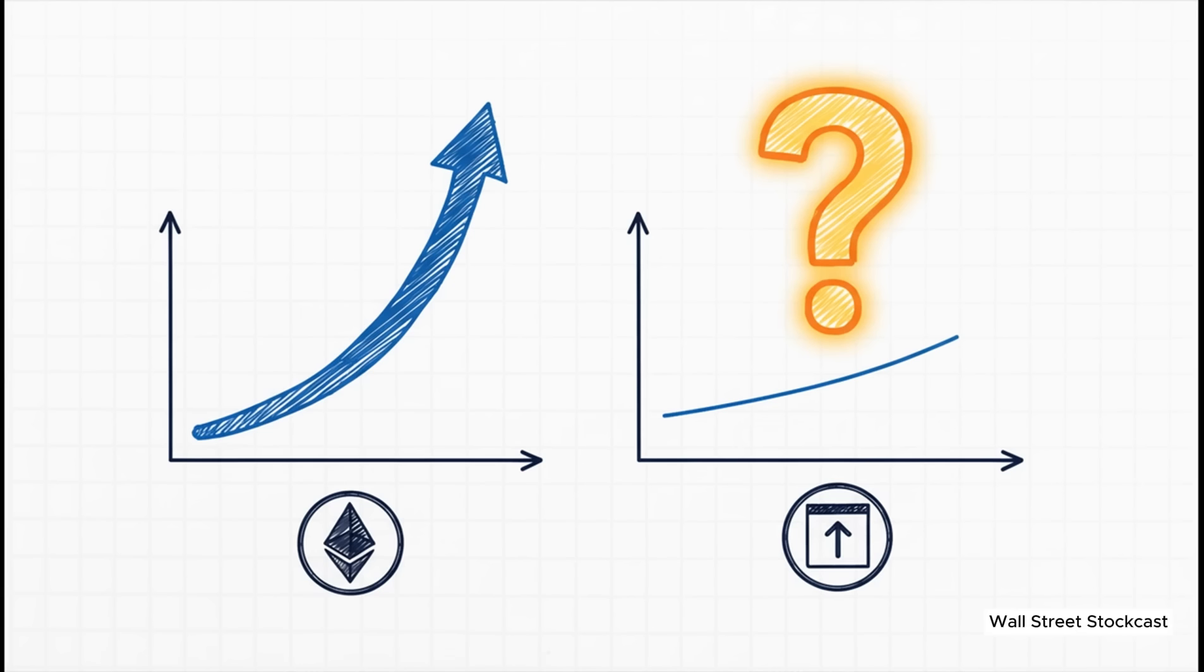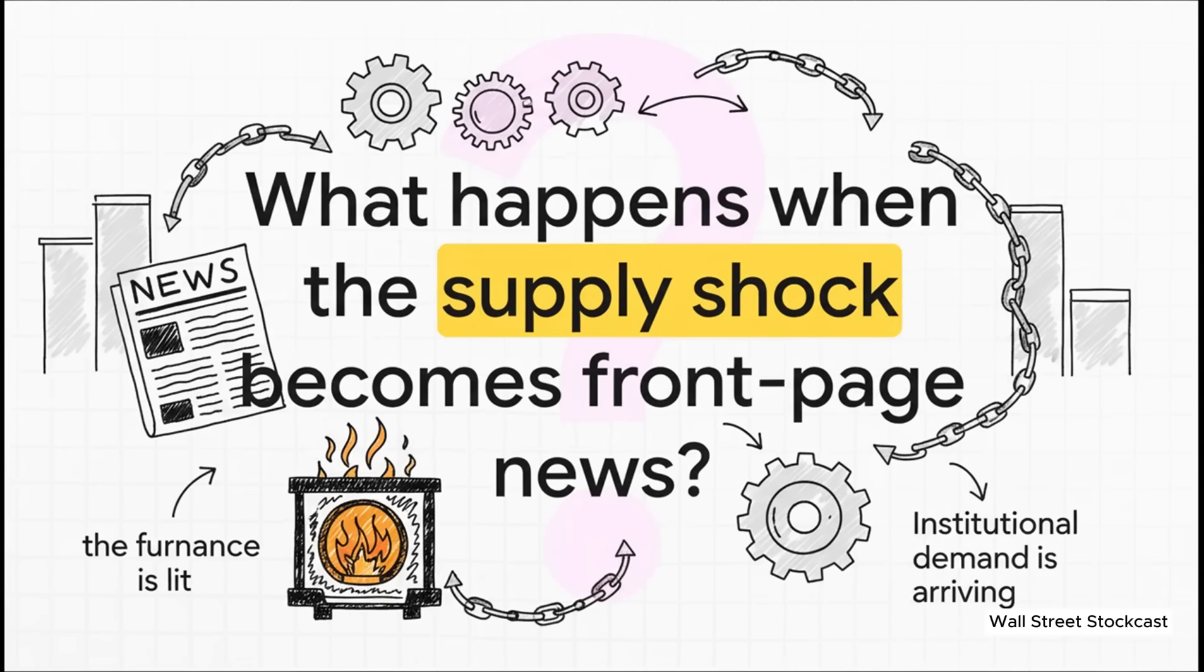And this is the absolute core of the investment thesis we're looking at today. The argument is simple. The price of the underlying asset, ETH, is starting to wake up to this new deflationary reality. But the stock price of the public company holding a massive fixed amount of it, BMNR, is still lagging way behind. The market for the stock just hasn't caught up yet. It hasn't priced in this fundamental change. And that delay, that right there, is the opportunity gap. So when you put it all together, what you have is this incredible monetary experiment playing out in real time. A global, decentralized currency that is mechanically programmed to destroy itself at a faster and faster rate the more it gets used. The on-chain data shows the furnace is lit. The institutional demand is starting to show up. So the only real question left is, what happens when this slow-moving on-chain supply shock finally crosses over into the mainstream and becomes front-page news?